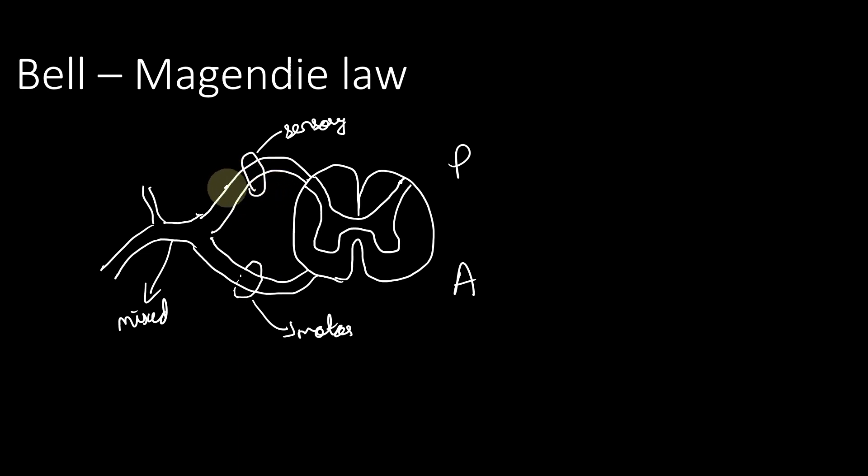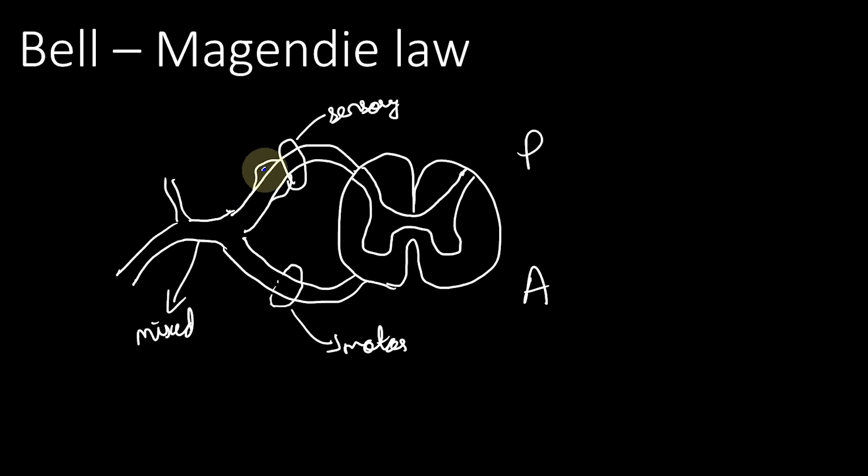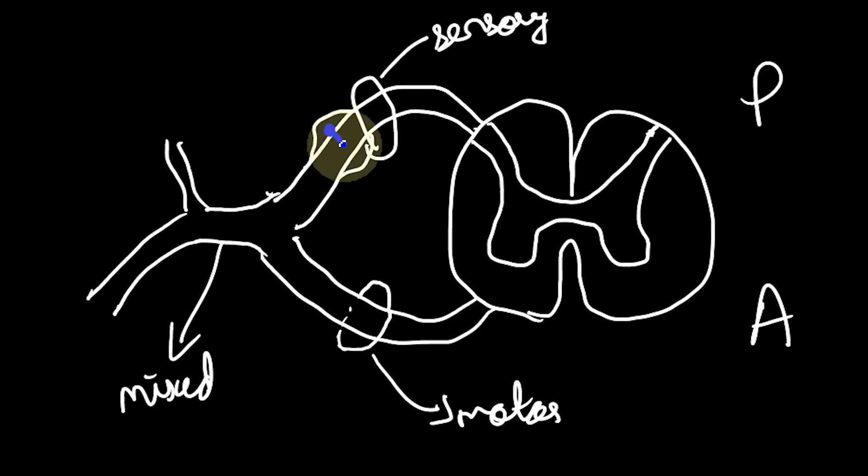Now you know that in the dorsal root you have a small swelling called the dorsal root ganglion. In the dorsal root ganglion you have pseudo-unipolar neurons which have a cell body, and the axon divides into a peripheral process and the central process.